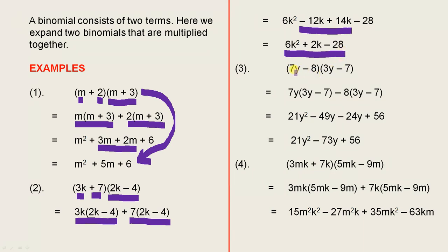Number 3: those two terms here multiplied by those two terms. This is how we expand them, the same way we did for those first two. The 7y is multiplied by the 3y minus 7, and then we have minus 8 outside of 3y minus 7.